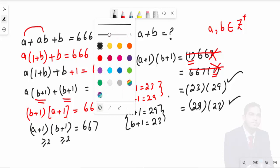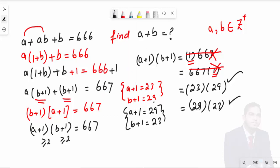Looking at these values, first taking a + 1 = 23, that means a = 22. And b + 1 = 29, so b = 28. These are the values of a and b.